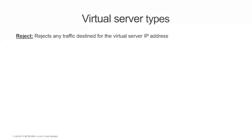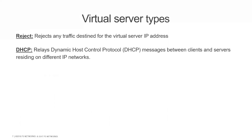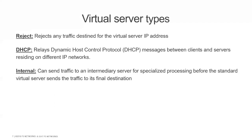We also have a reject virtual server — as the name says, it just rejects any traffic destined for that IP. The DHCP virtual server will relay DHCP messages on different IP networks. And the internal virtual server can send traffic to an intermediary server for specialized processing before the standard virtual server sends traffic to its final destination. The standard is the most common because all the other ones are really specific to do something particular, so if you don't want to do something really specific, choose the standard one.